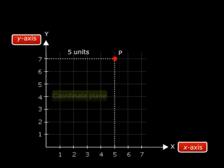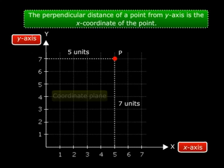Now the perpendicular distance of a point from the y-axis is the x-coordinate of the point. So what is the x-coordinate of the point here? You can see that point P is at a distance of five units from the y-axis, so this means that the x-coordinate of point P is five.